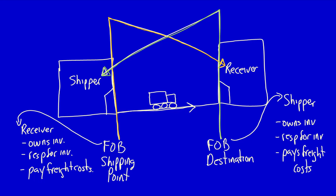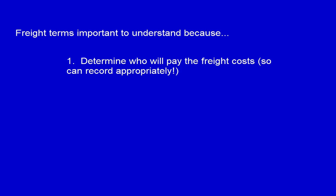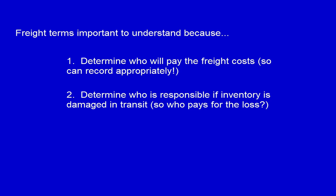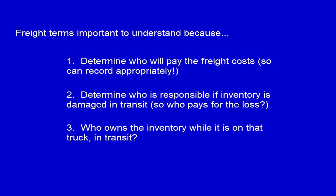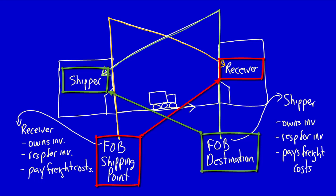FOB shipping point — it's the receiver's problem while it's in transit. FOB destination — it's the shipper's problem. Why are freight terms so important to understand? Three reasons. One, it determines who pays the freight costs, and we have to record those costs in a specific manner. Two, if inventory is damaged in transit, it tells us whether we can return the inventory or whether we're stuck assuming the costs of the damaged goods. And finally, it indicates who owns the inventory, so we know whether to add it or subtract it from the inventory count.